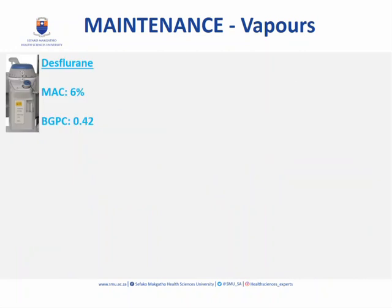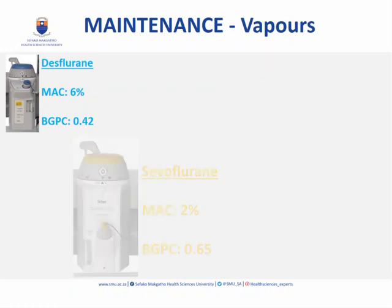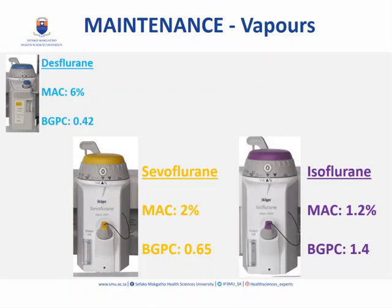Sevoflurane has a MAC of 2% and a blood-gas partition coefficient of 0.65 — so it is more potent than desflurane and has low solubility, though not as low as desflurane. Isoflurane is more potent than both desflurane and sevoflurane, but has a much higher blood-gas partition coefficient, so it takes slightly longer to work and slightly longer to wash out.